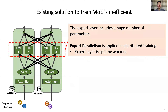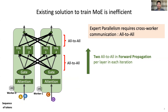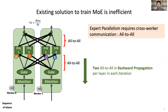Unfortunately, training a MoE model is non-trivial, since the expert layer includes a huge number of parameters. Expert parallelism is required in distributed training. Specifically, the expert layer is partitioned across workers. Existing solutions to train MoE are inefficient, because they require cross-node communication. There are two stages in each iteration: forward propagation and backward propagation. In the forward propagation, tokens are sent to target experts by all-to-all communication. After the expert computation, the result is fetched by another all-to-all communication. So there are two all-to-all communications in each MoE layer. Similarly, in the backward propagation, there are still two all-to-all communications.